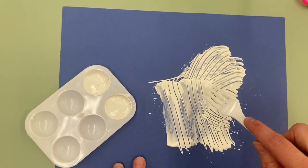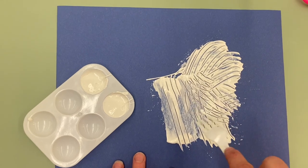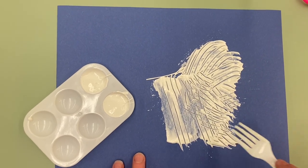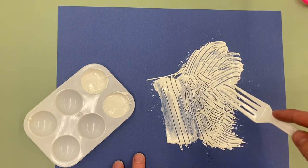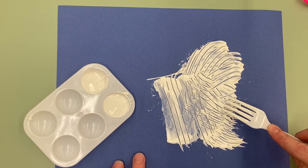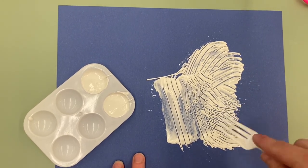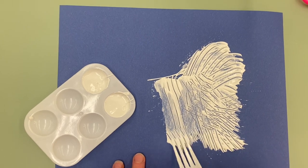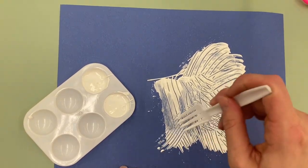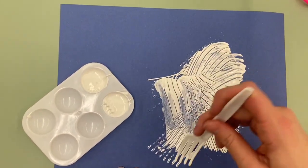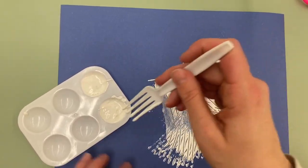You could also try using the side of your fork like this and swish it around this way. And then you could also go back in and scratch into it. That looks pretty cool. What happens if we do short marks like this? Whoa, those are pretty cool too.